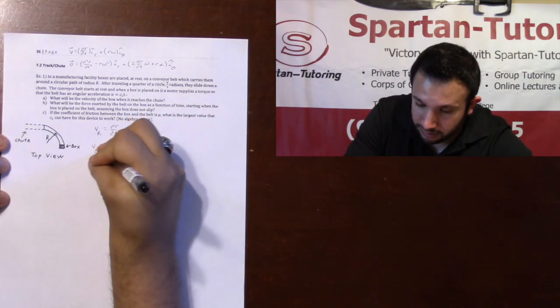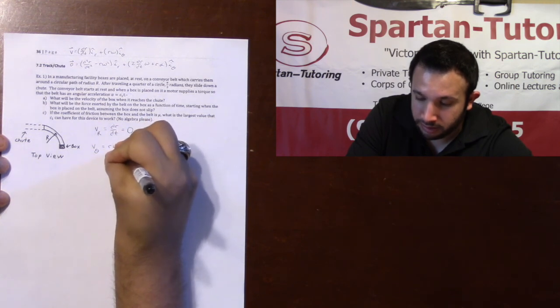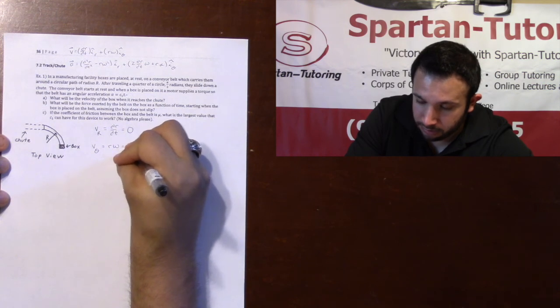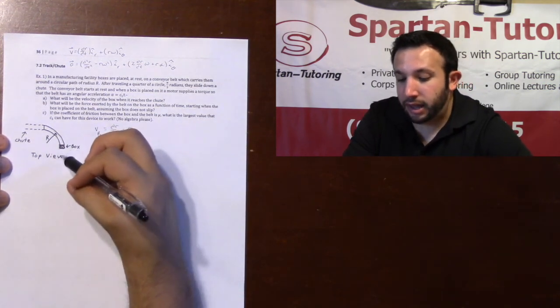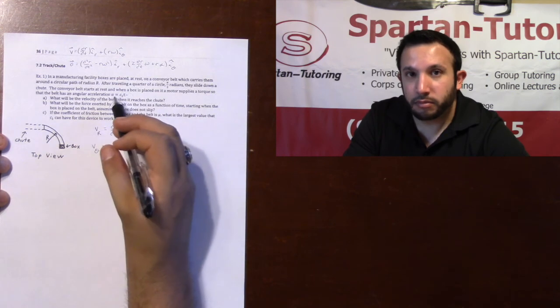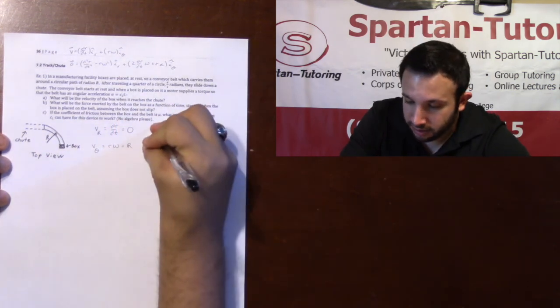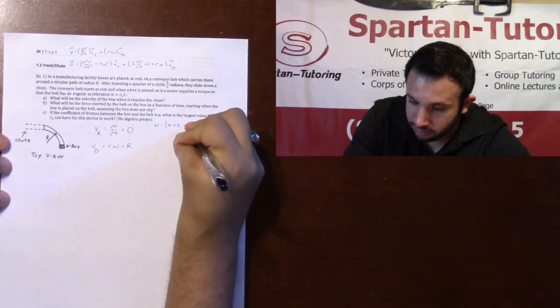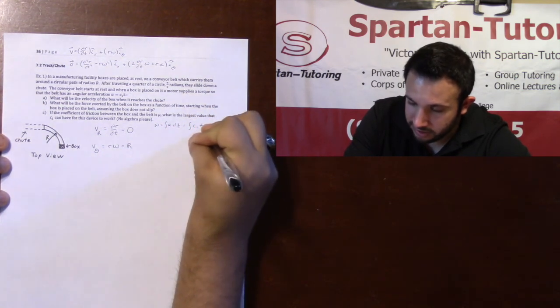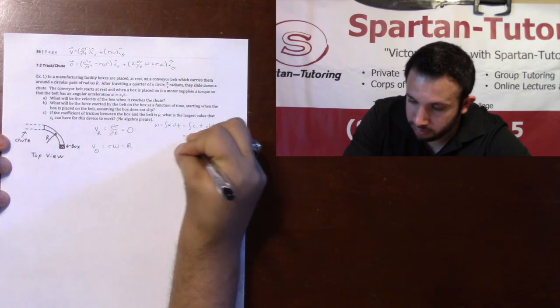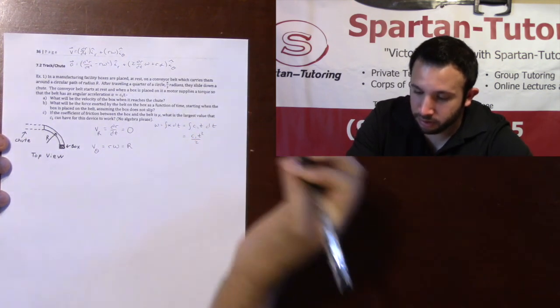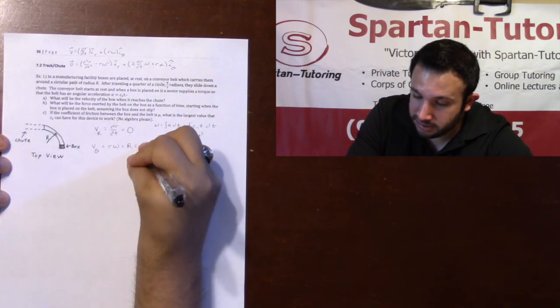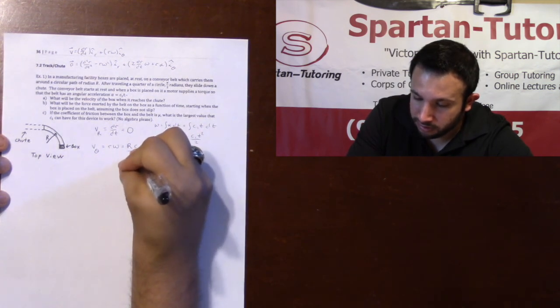As for vθ, vθ equals rω, where your radius is given to be capital R. I don't know what omega is, but I know what alpha is. Omega equals the integral of your alpha, which will be the integral of c1t, which is c1t squared over 2. So this omega is c1t squared over 2.